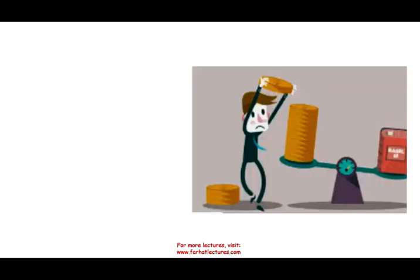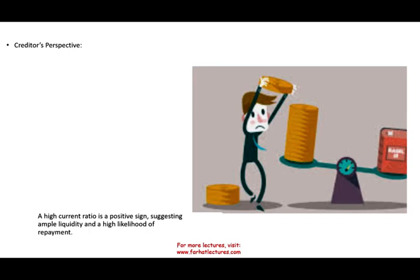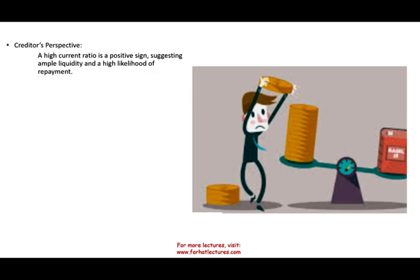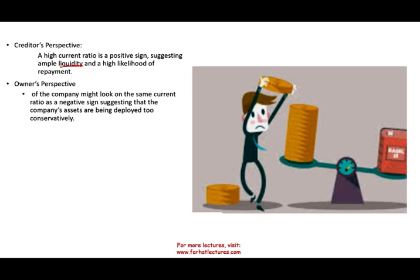The current ratio can be viewed from different perspectives. From a creditor's perspective — people that lend money — a high current ratio means the company has plenty of liquidity, so they're comfortable. They prefer a high current ratio because it means more protection and a higher likelihood of being repaid. However, a lot of inventory may not actually be liquid, even if it inflates the ratio.